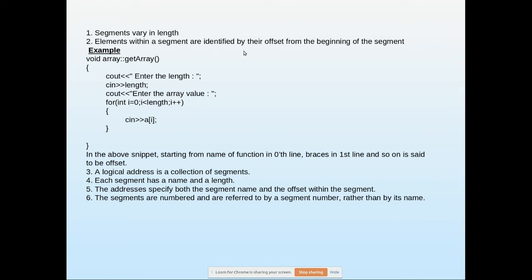Elements within the segments are identified by their offset from the beginning. What do we mean by offset? For example, this is at the zeroth line, this is a function, and we consider this as a segment. This is zero, this line is one, this is two - that is called offset. Elements within a segment are identified by their offset from the beginning of the segment.